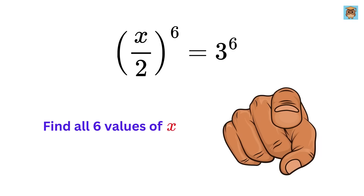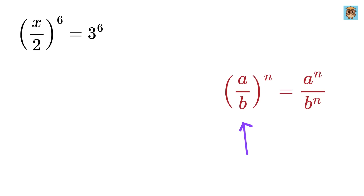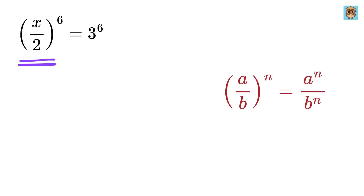Our mission, should you choose to accept it, is to find all six roots of x. As a first step, we need to understand what it means to raise a fraction to a power. Using this rule of exponents, when we have a fraction inside brackets and raise it to an exponent, we apply the exponent to both the numerator and denominator separately. This means x divided by 2, raised to the power 6, is the same as x raised to the power 6 divided by 2 raised to the power 6.